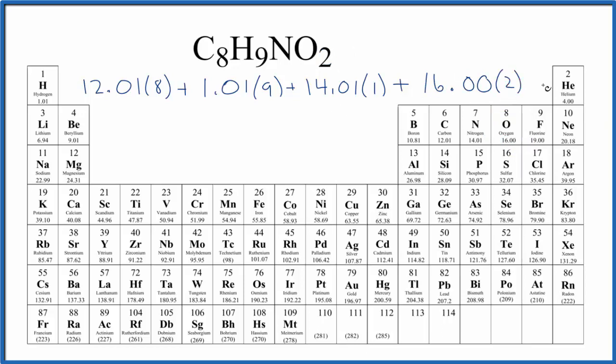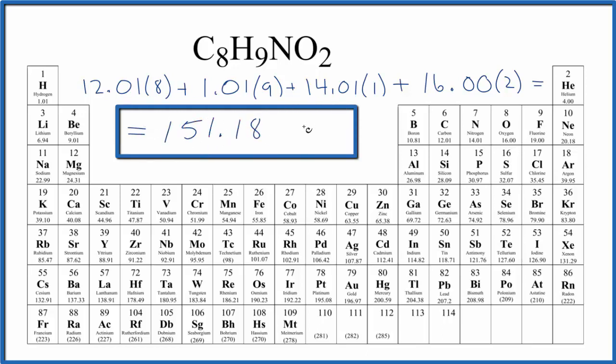So what we need to do is multiply these numbers together here, and then add all of those numbers up. And when we do that, we get 151.18, and the units, grams per mole.